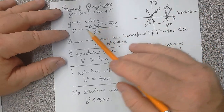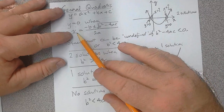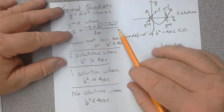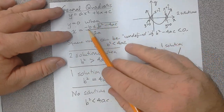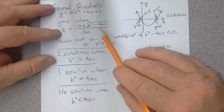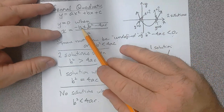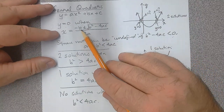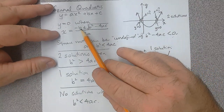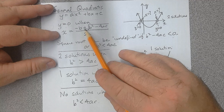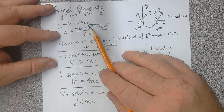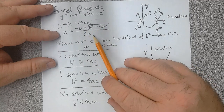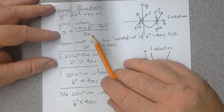The idea is we apply this interesting formula called the quadratic formula. It is negative b, plus or minus the square root of b squared minus 4ac, all divided by 2a.